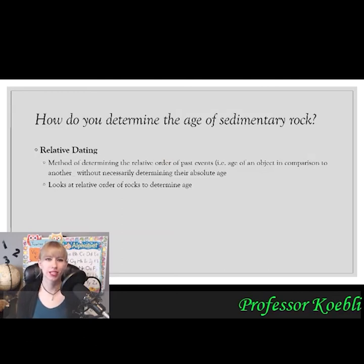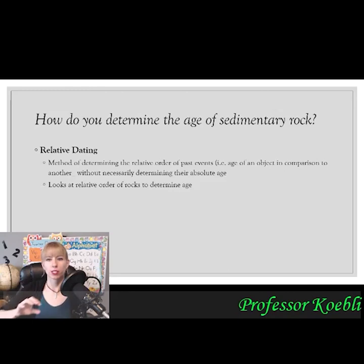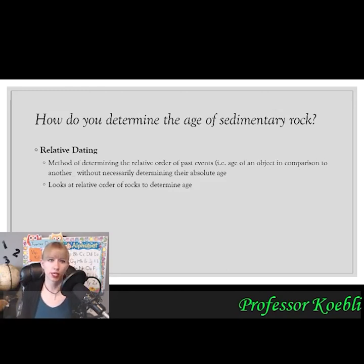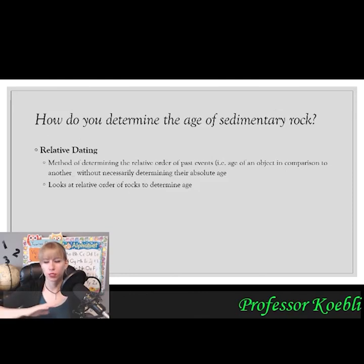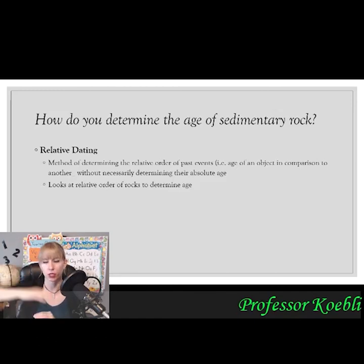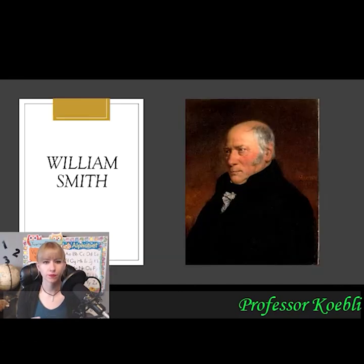How do we determine the age of sedimentary rock? That's relative dating — the method of determining the relative order of past events, meaning the age of an object in comparison to another without necessarily determining absolute age. We're not doing radiometric dating, we're doing relative dating. We know that the rock at the bottom should be the oldest and the rock on top should be younger — that's the law of superposition, which we'll cover in two lectures.